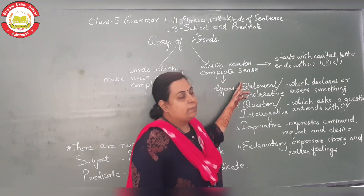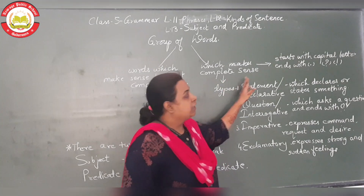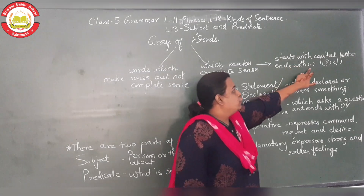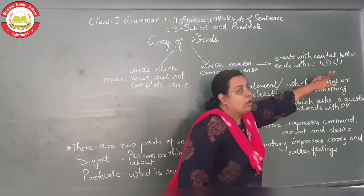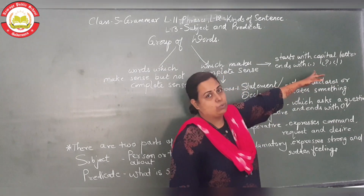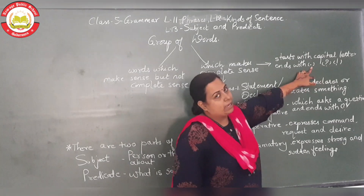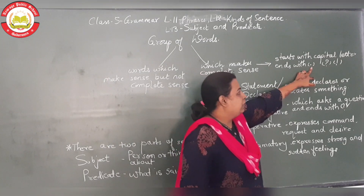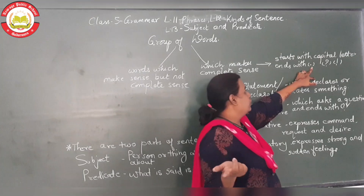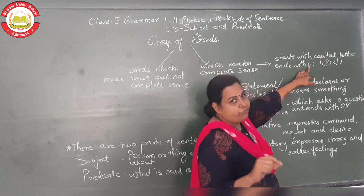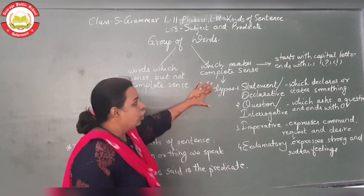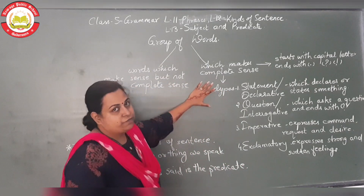Now, one thing you need to keep in mind about a sentence is that it starts with a capital letter and ends with a full stop, question mark, or exclamation mark. If it is a plain sentence, then it will end with a full stop. Now let's move on to the types of sentences.